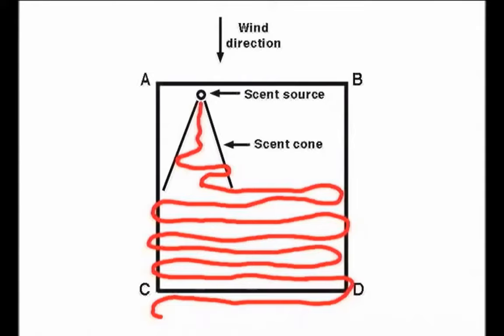The owner walks with his dog using a grid search pattern, scanning the area in approximately equal intervals. After his dog detects the scent and before he turns towards the source, he may make a few very short scans to establish where it is coming from.